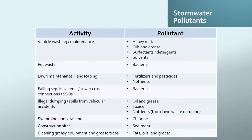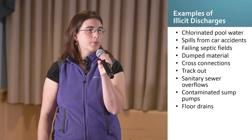To connect the dots between the activity and the pollutant you may see: vehicle washing and maintenance can produce heavy metals, greases, and detergents. Pet waste results in bacteria. Lawn maintenance and landscaping can produce fertilizers, pesticides, and nutrients. Failing septic systems and cross connections result in bacteria. Illegal dumping could involve greases, toxics, or nutrients such as lawn waste. Swimming pool draining results in chlorine. Construction sites can result in sediment. Cleaning greasy equipment at restaurants results in fats, oils, and grease.